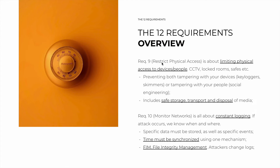Requirement 9, 'Restricting Physical Access,' is the real-world equivalent of Requirement 7. Requirement 7 was about limiting digital access; this one is about limiting physical access to both devices and people. It covers CCTV, locked rooms, safes, and restricted areas. The goal is to prevent attackers from tampering with your devices — using keyloggers or placing skimmers on POS devices — or tampering with your people through social engineering. It also includes procedures for safe storage of media, safe transportation, and safe disposal. For example, if you have a hard drive with cardholder data: how secure is it, what are the transportation rules, and when disposed of, do you have a certificate of destruction?